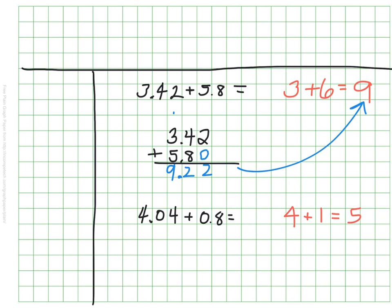Once I have my estimate in my head, I can go ahead and line these up vertically, making sure the decimals and therefore the place values are lined up. I'm going to go ahead and put in a placeholder again, and we'll just make sure we add these up as we normally would, just bringing our decimal straight down into our answer.